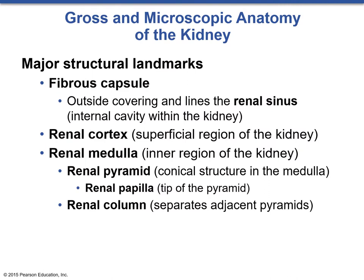When looking at the kidneys, there are a few major landmarks to discuss. First is the outer connective tissue covering called the fibrous capsule, which lines the renal sinus — the internal cavity within the kidney. From there we go into the renal cortex and then the renal medulla. The renal medulla consists of several renal pyramids; each tip of a pyramid is called the renal papillae, and a renal column separates each renal pyramid.